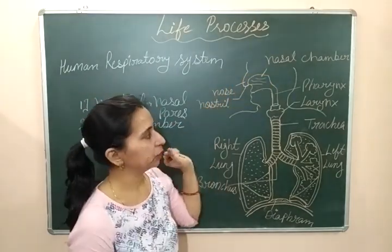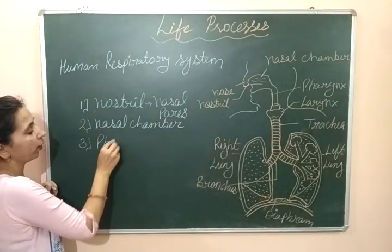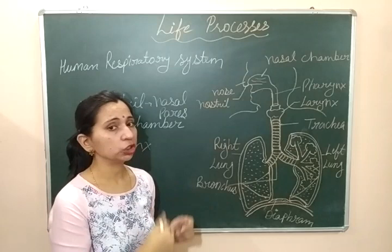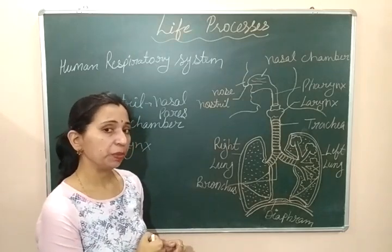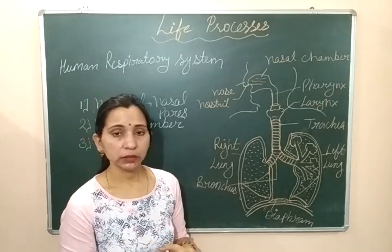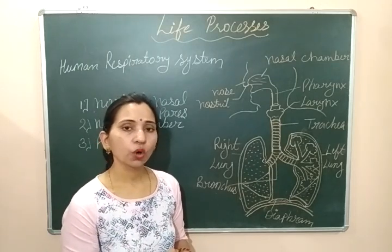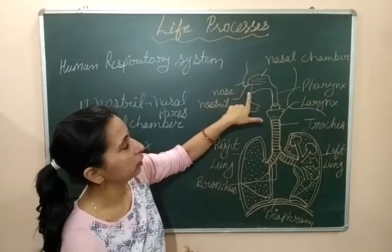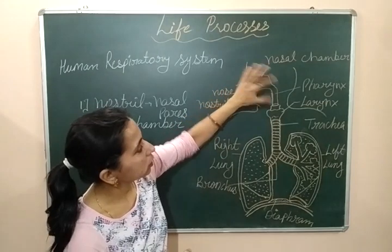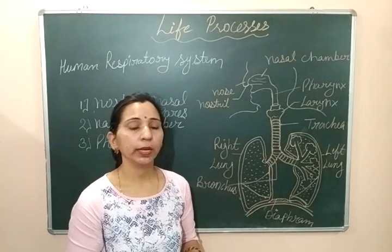After the nasal chamber, air passes through the next part of the respiratory system — the pharynx. The pharynx is the common passage through which both food and air travel. Behind the oral cavity, the pharynx is present, and after the nasal chamber, air also passes through the pharynx.